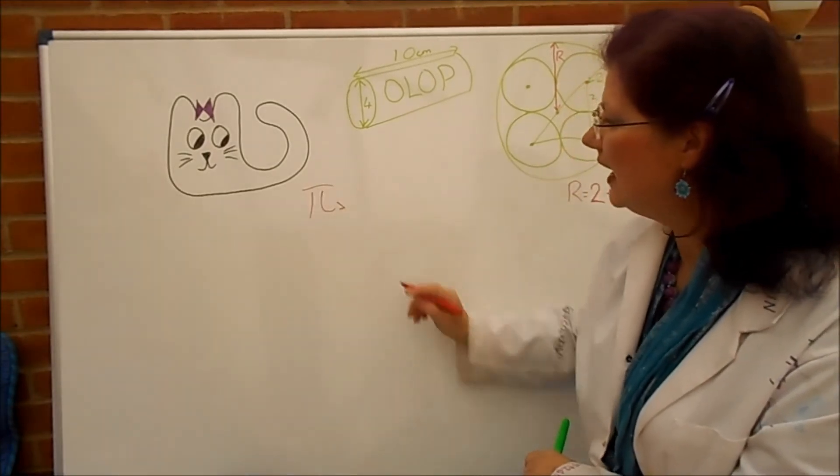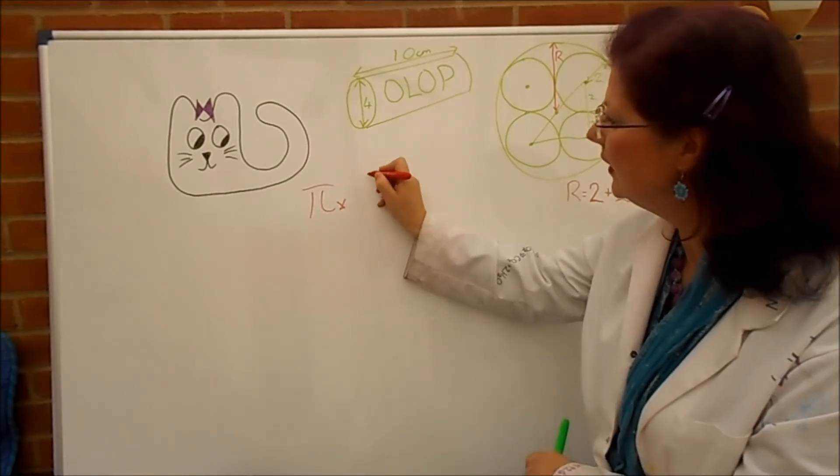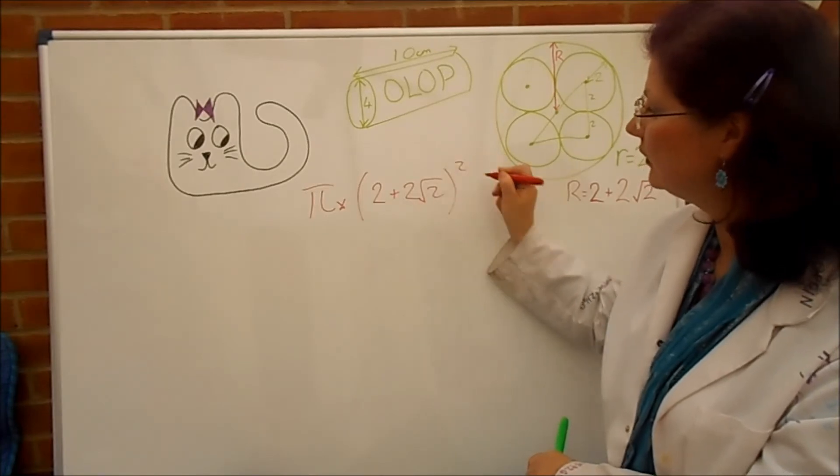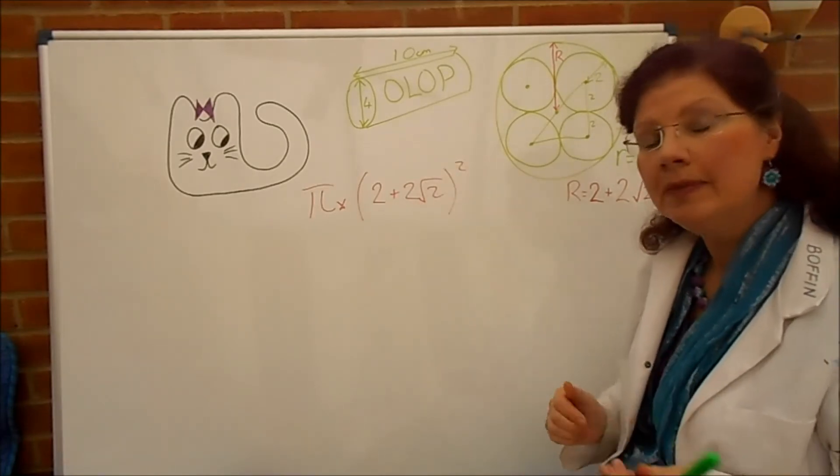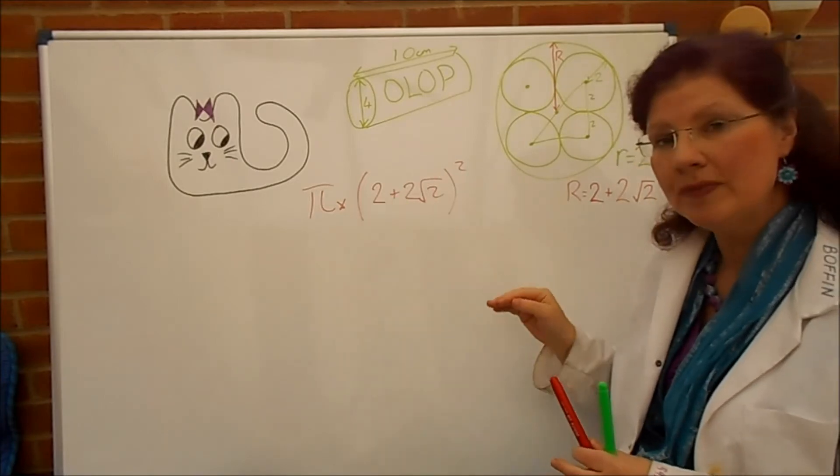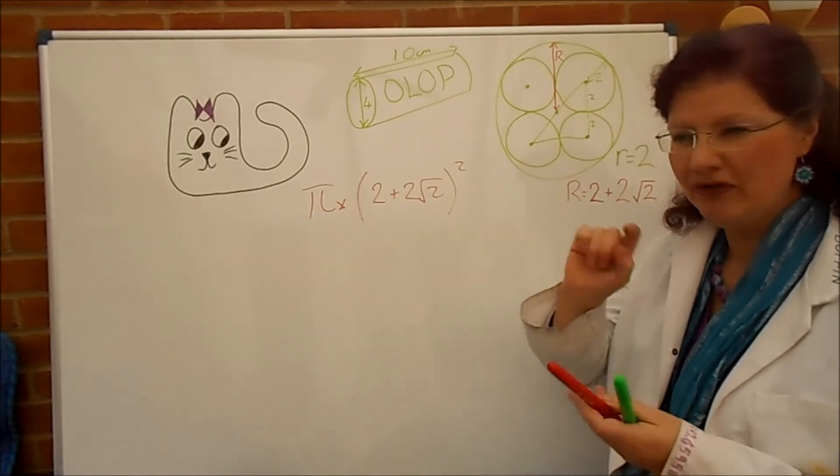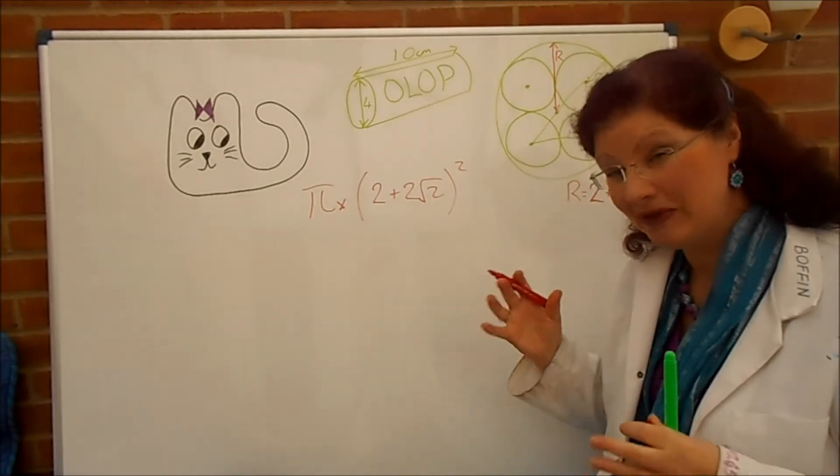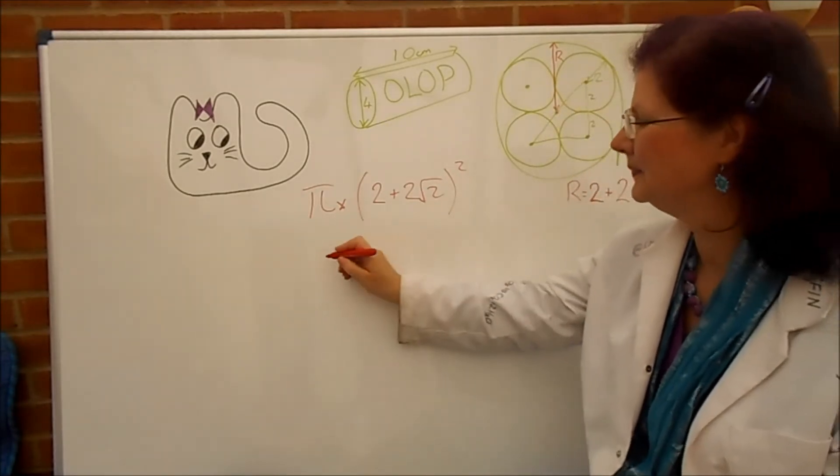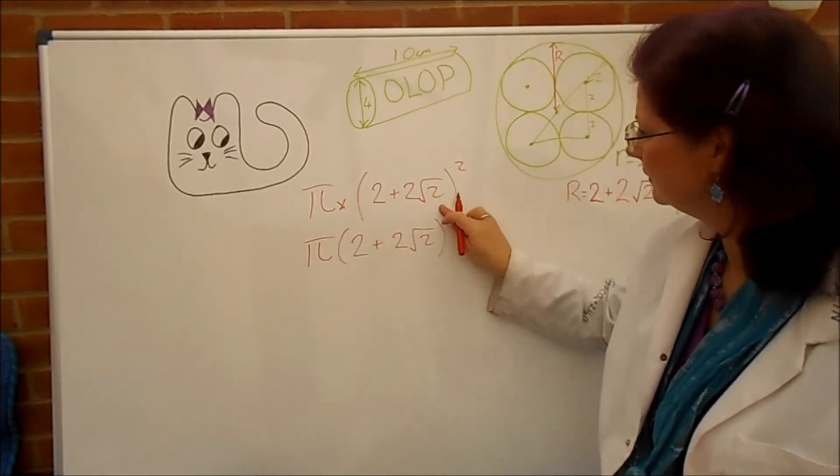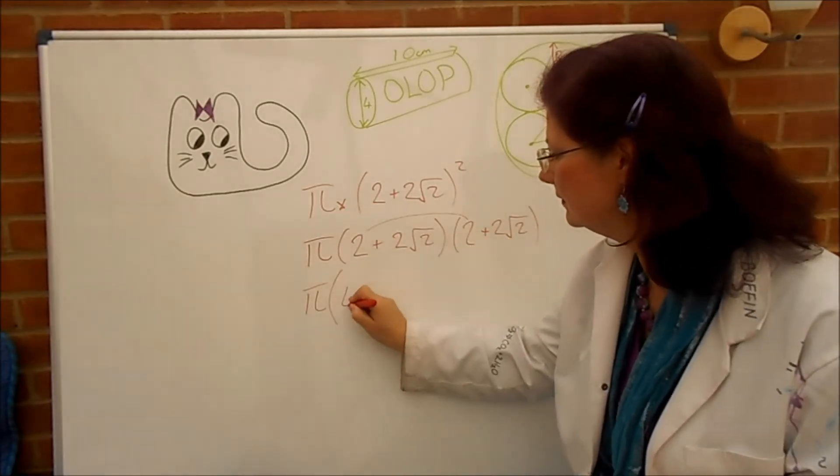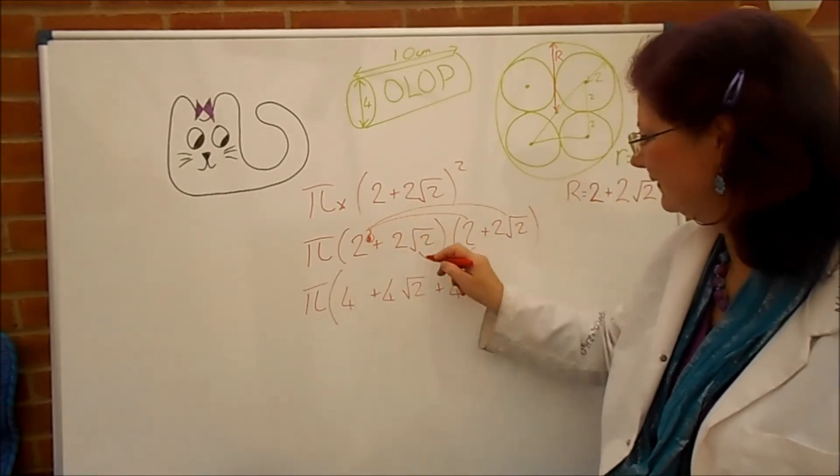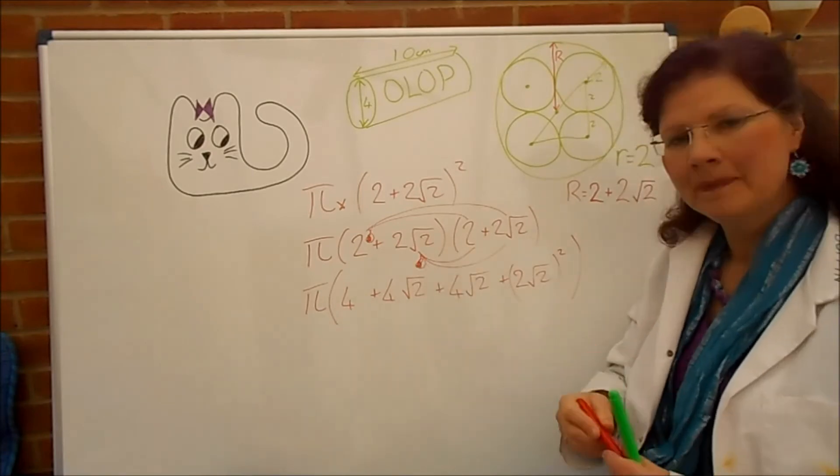So, we've got pi times the radius squared and the radius is 2 plus 2 root 2 and that's got to be squared. Okay, a little bit of quadratic multiplying out here. I'm going to write it out as two separate brackets then I'm going to do it by that foil or dragon clause method. If you're not sure what I'm doing, check out some of the other batty bopping videos where I go over it rather more slowly.